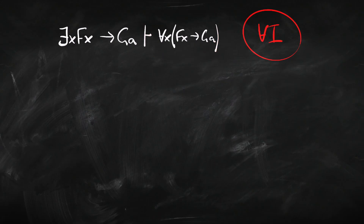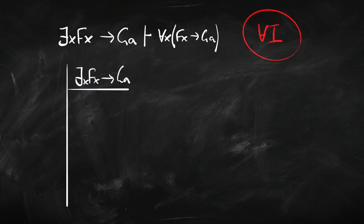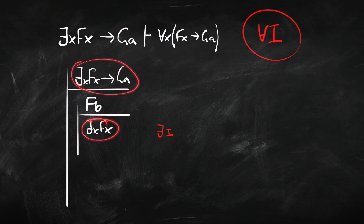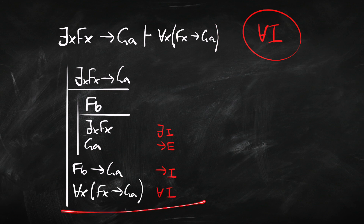How are we going to prove this? Our conclusion is universally quantified, so we're going to need to use universal introduction — it will basically be the final proof rule we use. To prove this, we need to prove it for an arbitrary name. We've already used A, so we're going to use B as our arbitrary name. We start by writing out the premise. We want to prove a conditional for arbitrary name B, so we assume the antecedent: B is F. Because B is F, we can infer that something is F using existential introduction. We then use that together with the premise via arrow elimination — modus ponens — to give us G(A). We assumed the antecedent and inferred the consequent, so we use arrow introduction. This is our arbitrary instance, and using universal introduction we get our conclusion.